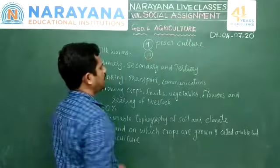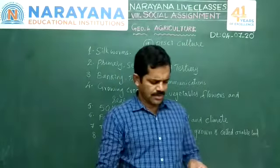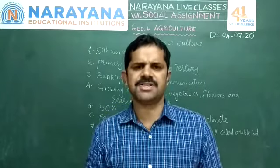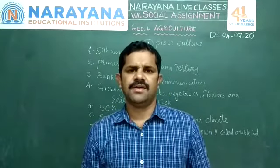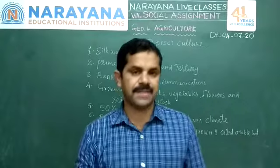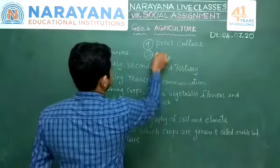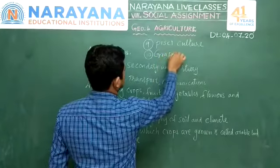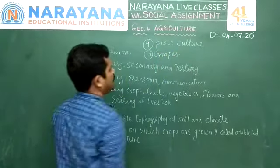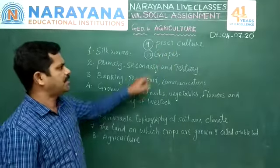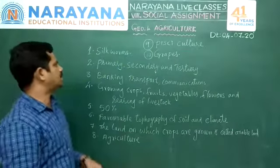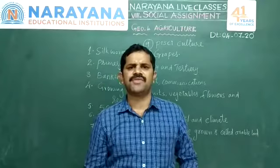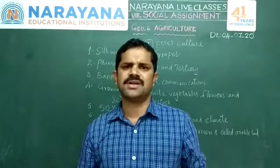Question number 10: Viticulture is related to the cultivation of grapes. So we have studied different types of cultures — pisciculture, viticulture, apiculture, horticulture — all are different types of cultures or cultivations.